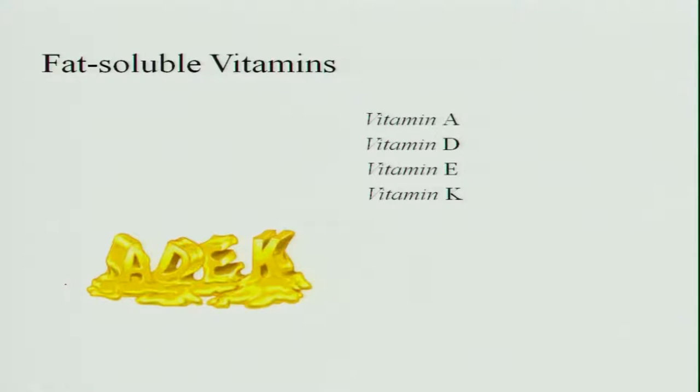Now let us move on to the minor nutrients, that is the vitamins. These vitamins are divided into two: the fat-soluble vitamins and water-soluble vitamins. We will initially start with the fat-soluble vitamins, which are Vitamin A, D, E, and K.